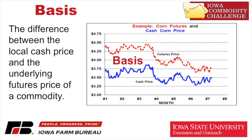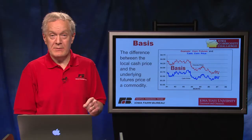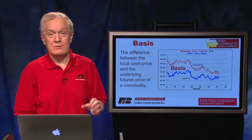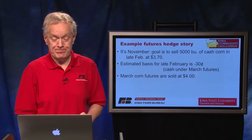Basis is the difference between the local cash price and the futures price, and in this graph it's the space between the lines. The red line is futures, the blue line is cash, and basis is the mathematical difference between those two lines.